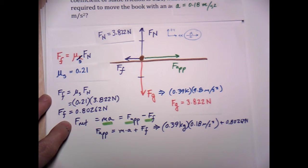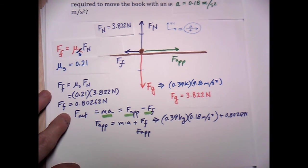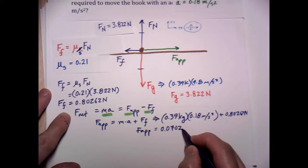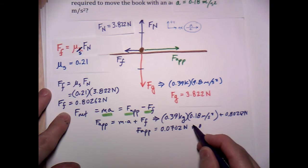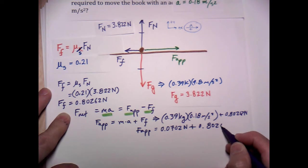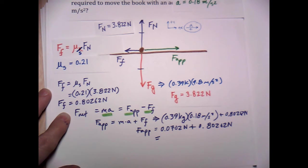Okay, and we go ahead and solve this out. Applied force is equal to 0.0702 newtons plus 0.80262 newtons. The applied force, and I'll now round it down to two significant digits, which is what we need to be using, force applied is equal to 0.87 newtons.